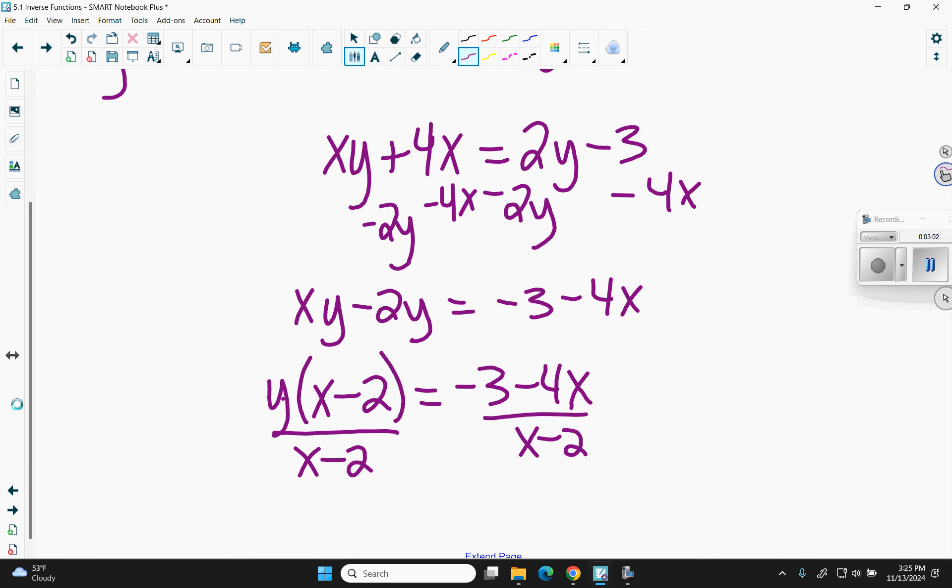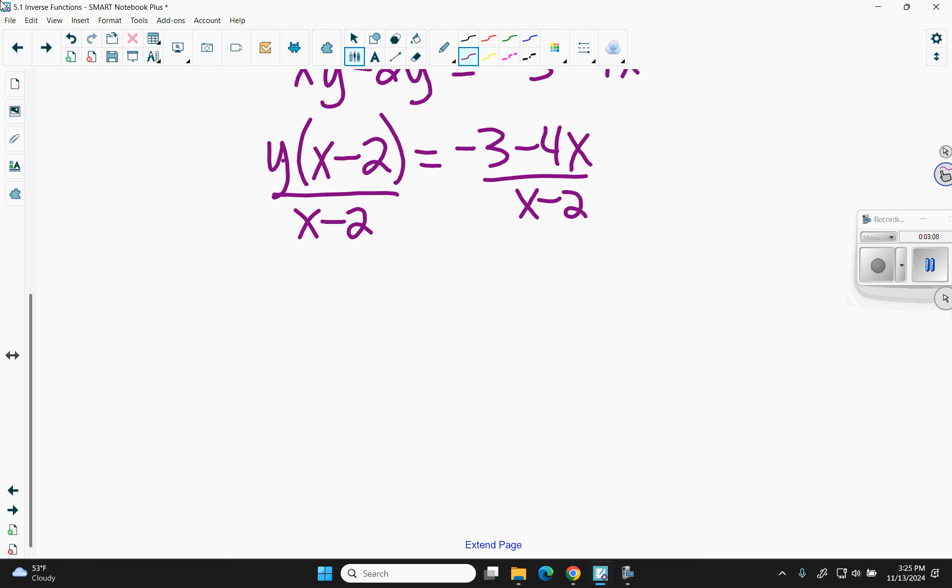So I get y equals negative 3 minus 4x over x minus 2. And if you want, you can use the fancy notation for f inverse.